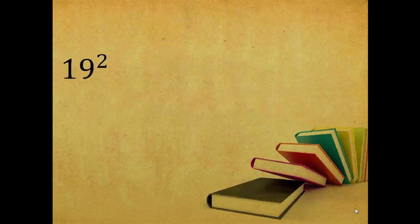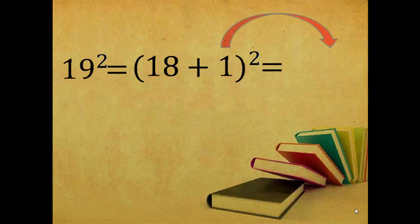Let's see another example. Square of 19 is equal to. Now, first of all, let's split up this 19 into 18 plus 1. Now we will take 1 as it is. See, 1 as it is.